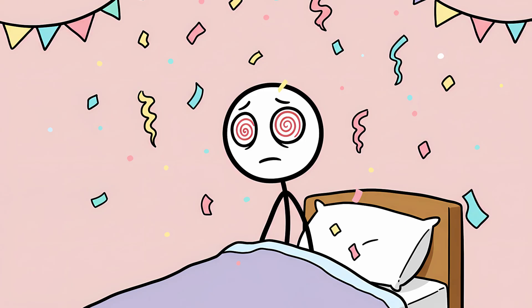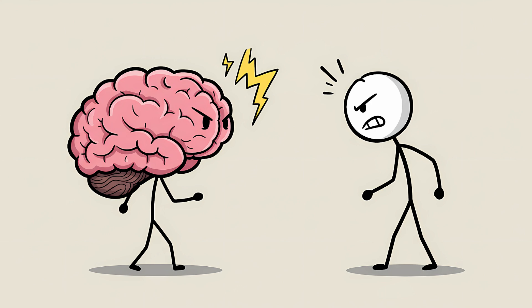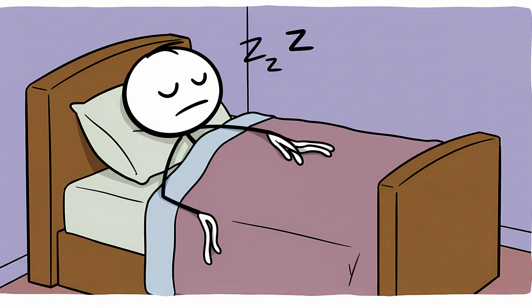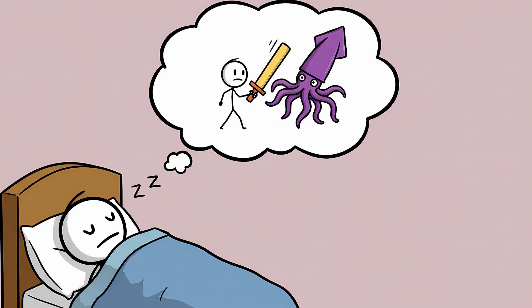Congratulations, you've just experienced a hypnic jerk. This is your brain and body having a spectacular miscommunication during their nightly handover. As you fall asleep, your muscles are supposed to smoothly transition into a relaxed, paralyzed state called atonia. This is a good thing. It's what stops you from physically acting out your dream where you're fighting a giant squid with a pool noodle.